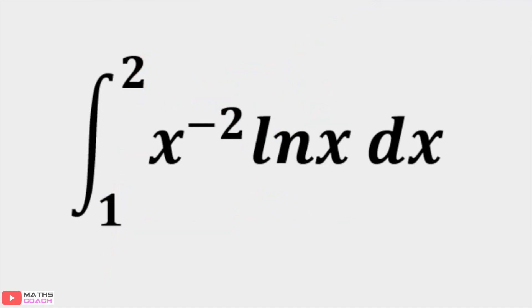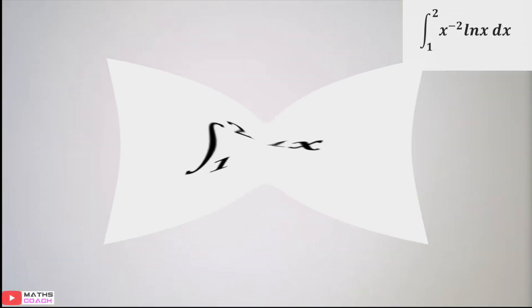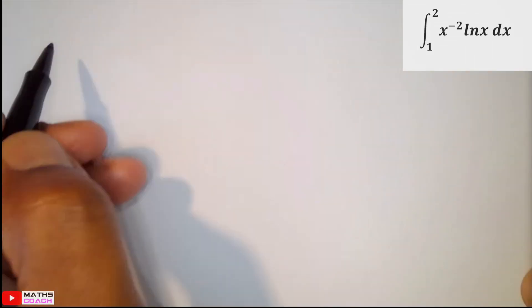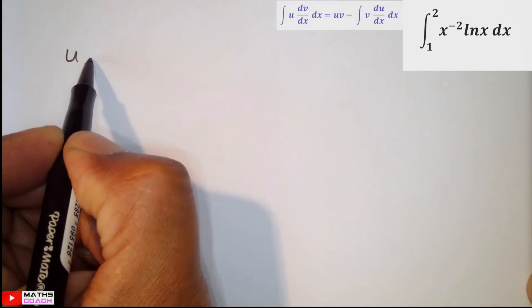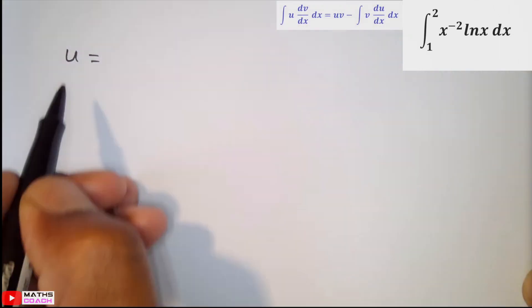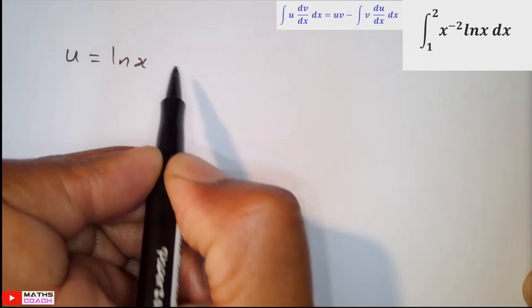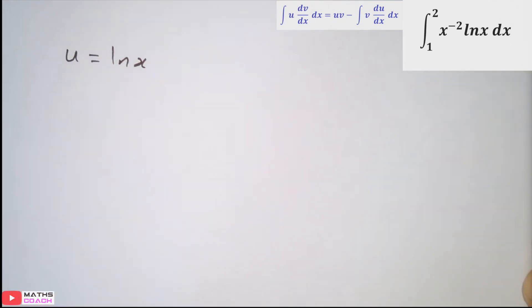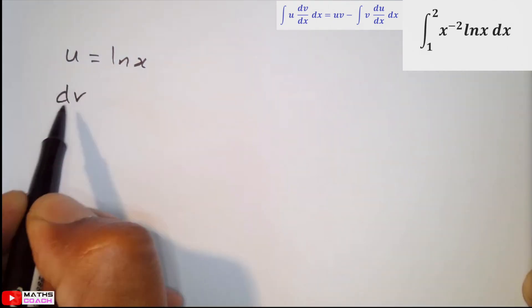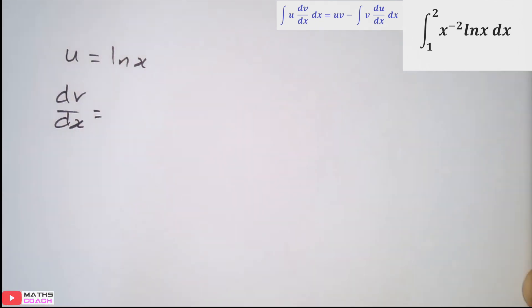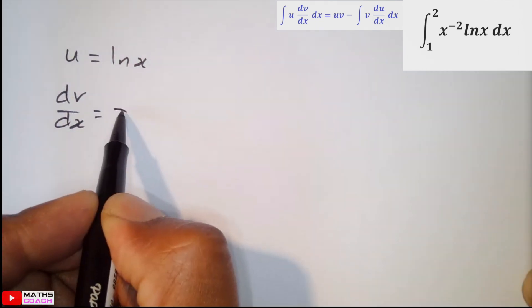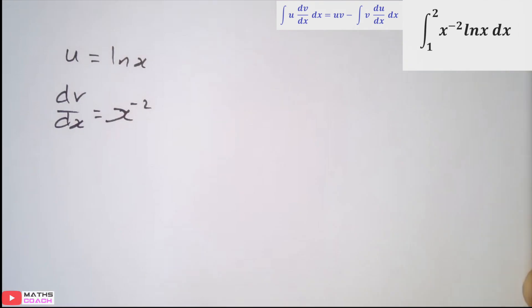So this is our first one. We need to integrate x to power minus 2 ln x with respect to x. We have a definite integration here, as you can see, limits between 1 and 2. So let's start off with u. We know that u would equal to ln x, as we mentioned earlier. So dv/dx will be our other expression. In this case, x to power minus 2.